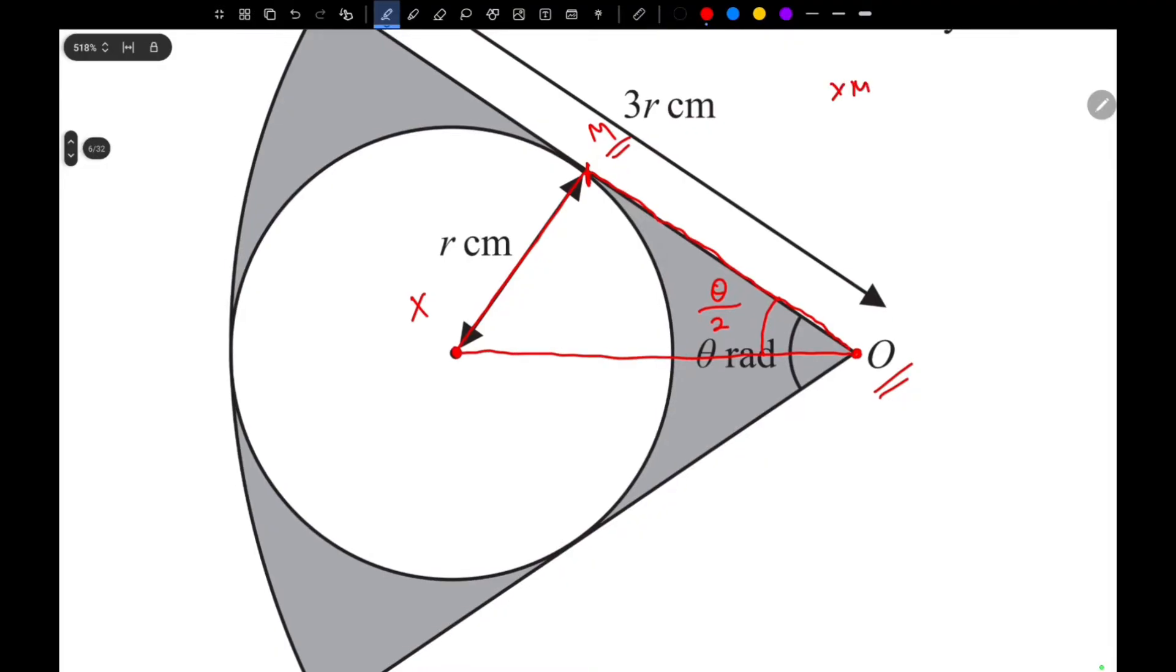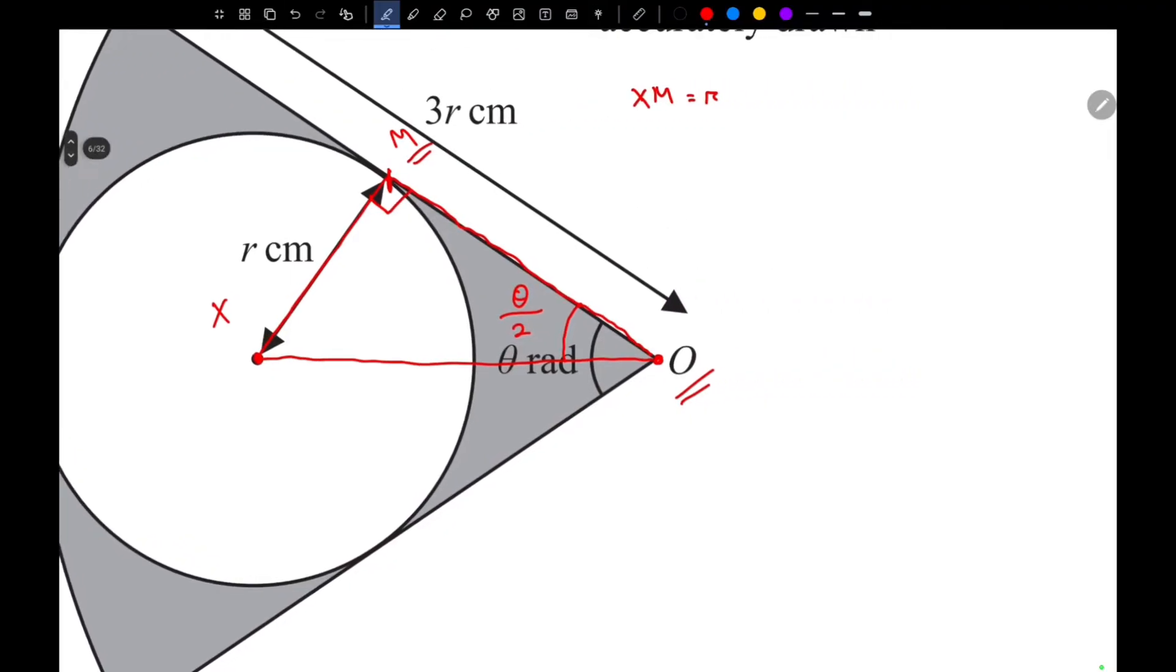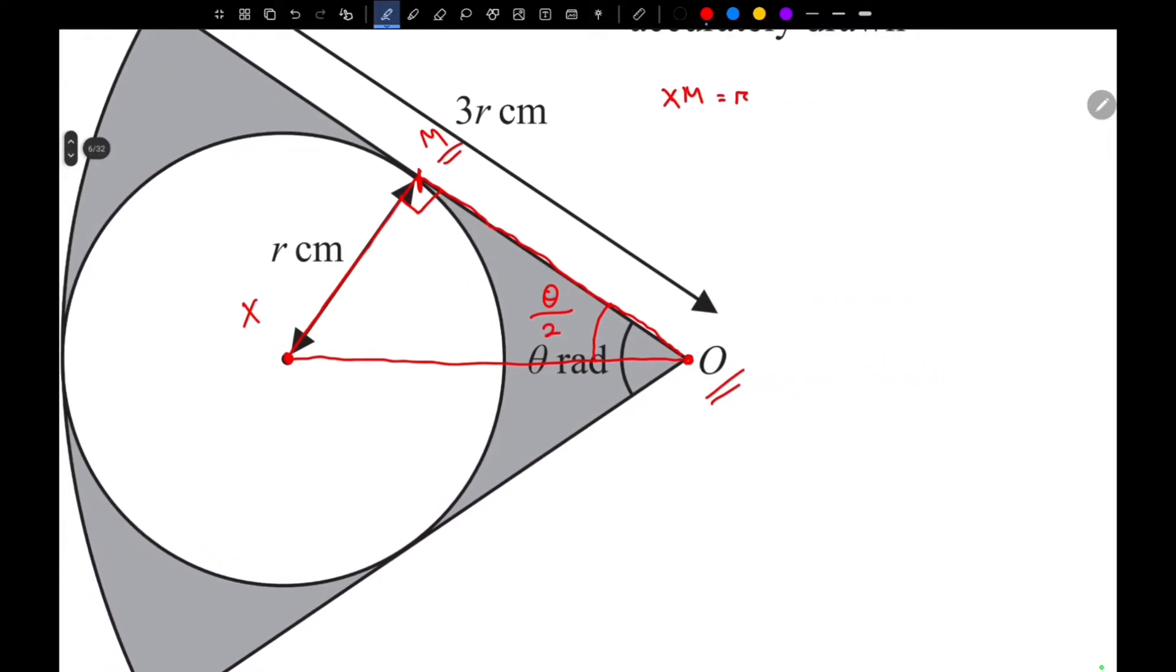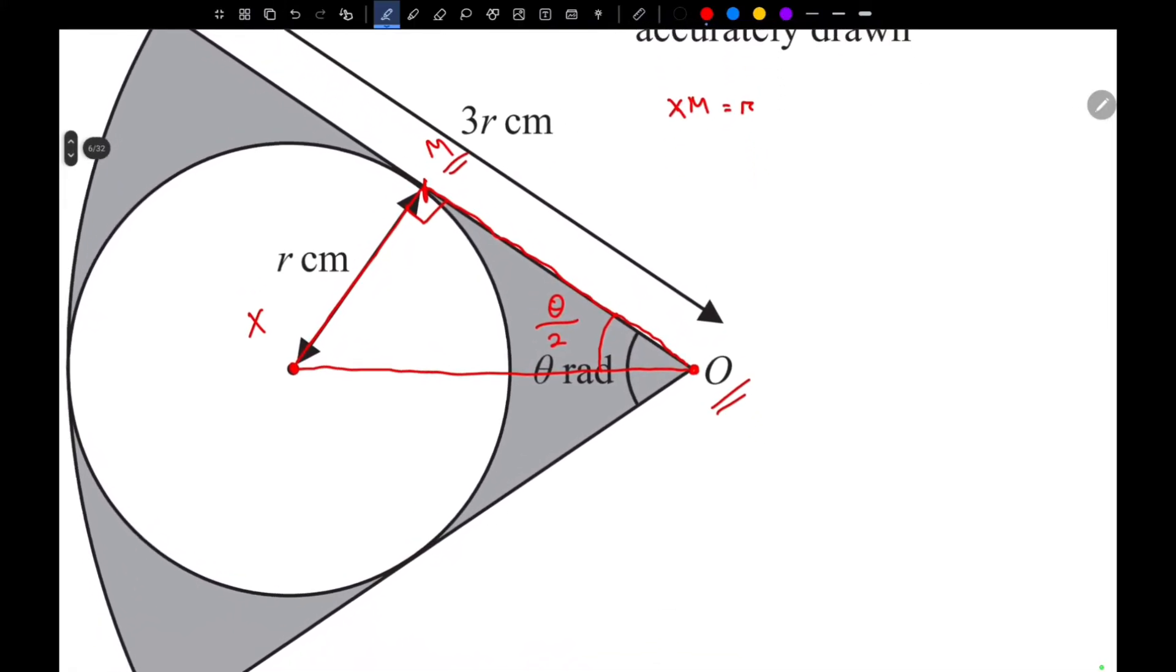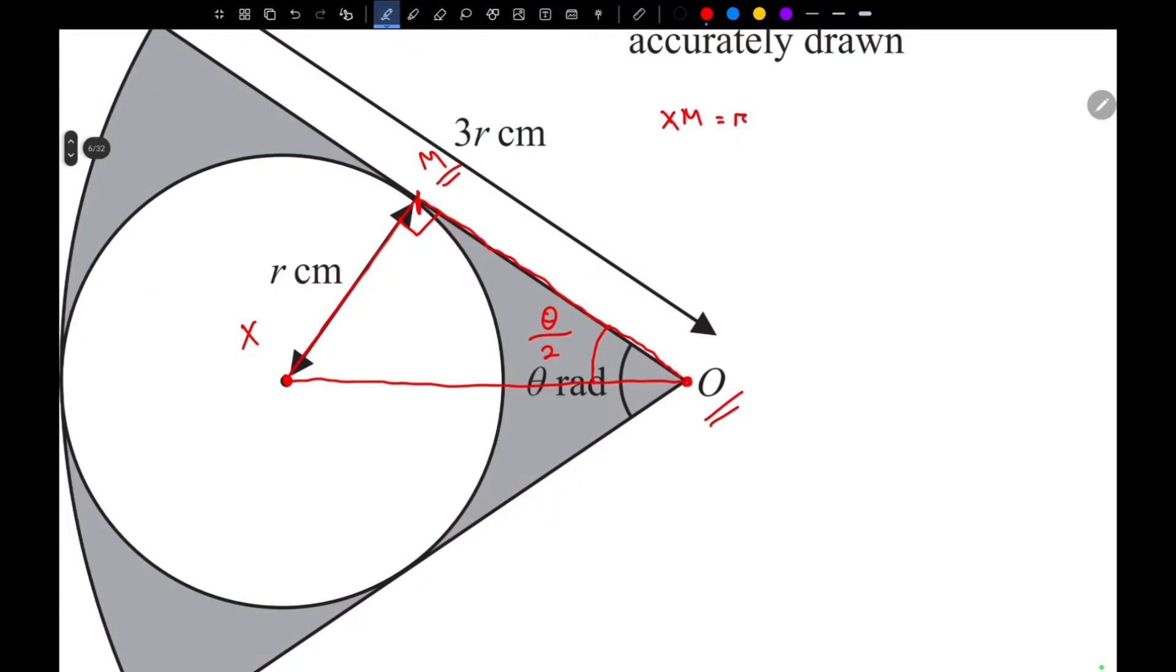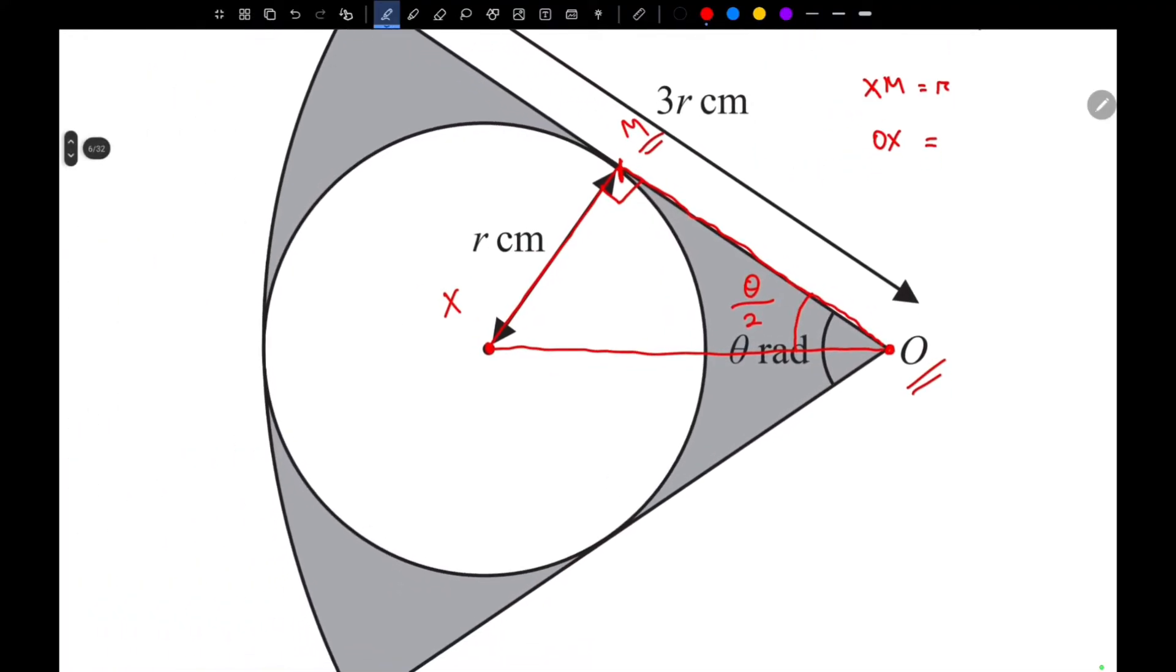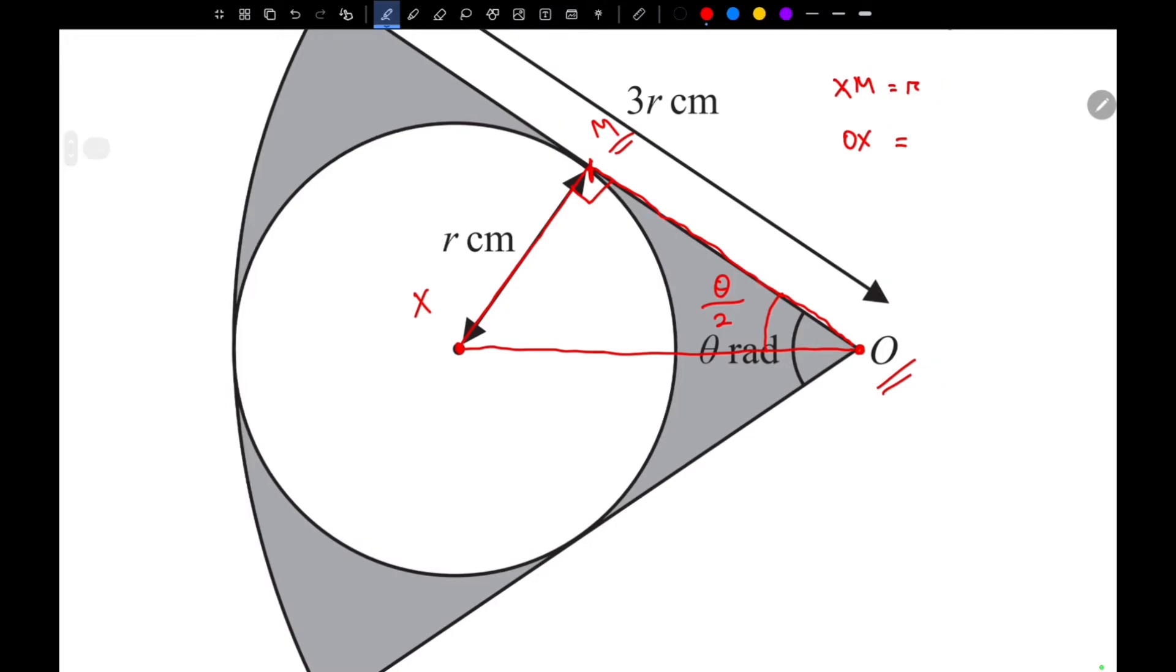We know the length of XM to be R, and this is a right angle triangle of course. Now we need to find out the length of OM, or what we can do is we can just find out the value of OX.